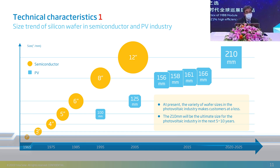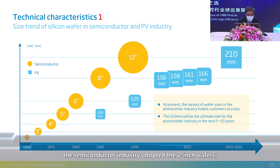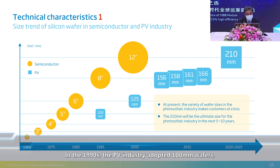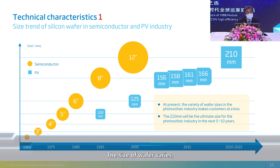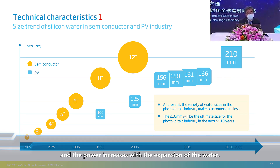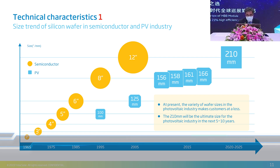Starting with the larger wafer: the same trend occurred in the semiconductor industry. In the 1960s, the semiconductor industry used the 2-inch wafer, and by 2005, the 12-inch wafer was ubiquitous. In the 1990s, the PV industry adopted the 100-millimeter wafer, and in 2008, the market saw sizes of 156, 157, 158, and 161 millimeters, then up to 166 millimeters. The current 210-millimeter wafer is equivalent to the 12-inch wafer, transferred from the semiconductor industry to PV, and can increase PV power even more.